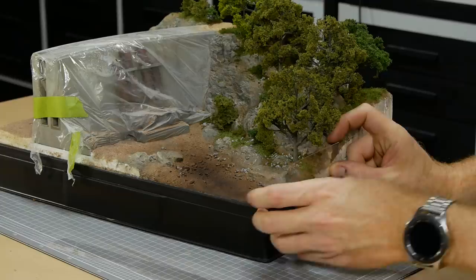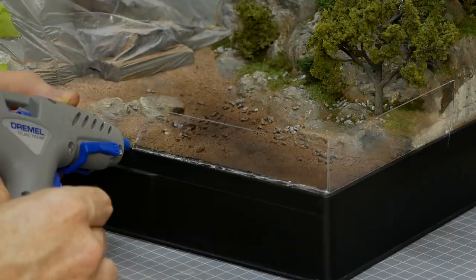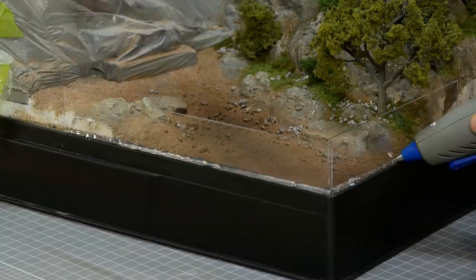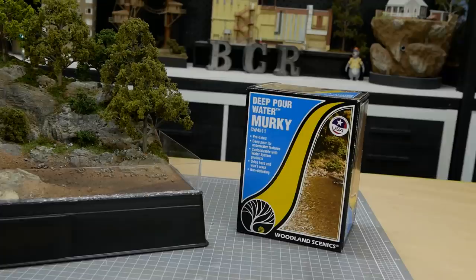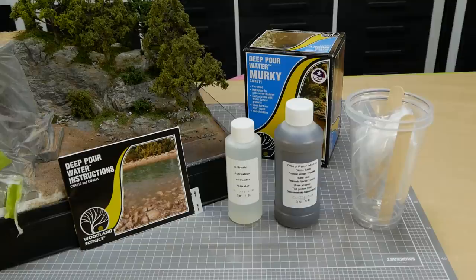Before adding water I paint the riverbed a darker brown to help simulate deeper water. The dam for the resin is made with some thin acrylic. Hot glue is used along the edges to ensure there is a watertight seal. You want to make sure it's very well sealed because even a small leak can make a big mess if you don't spot it straight away.